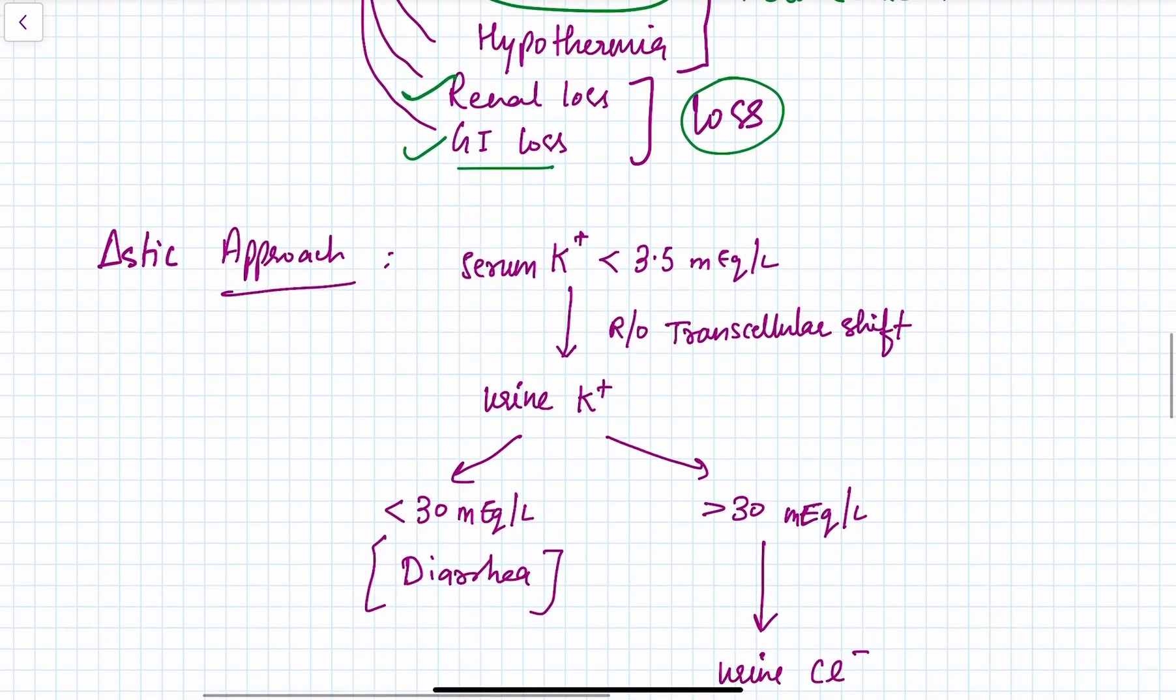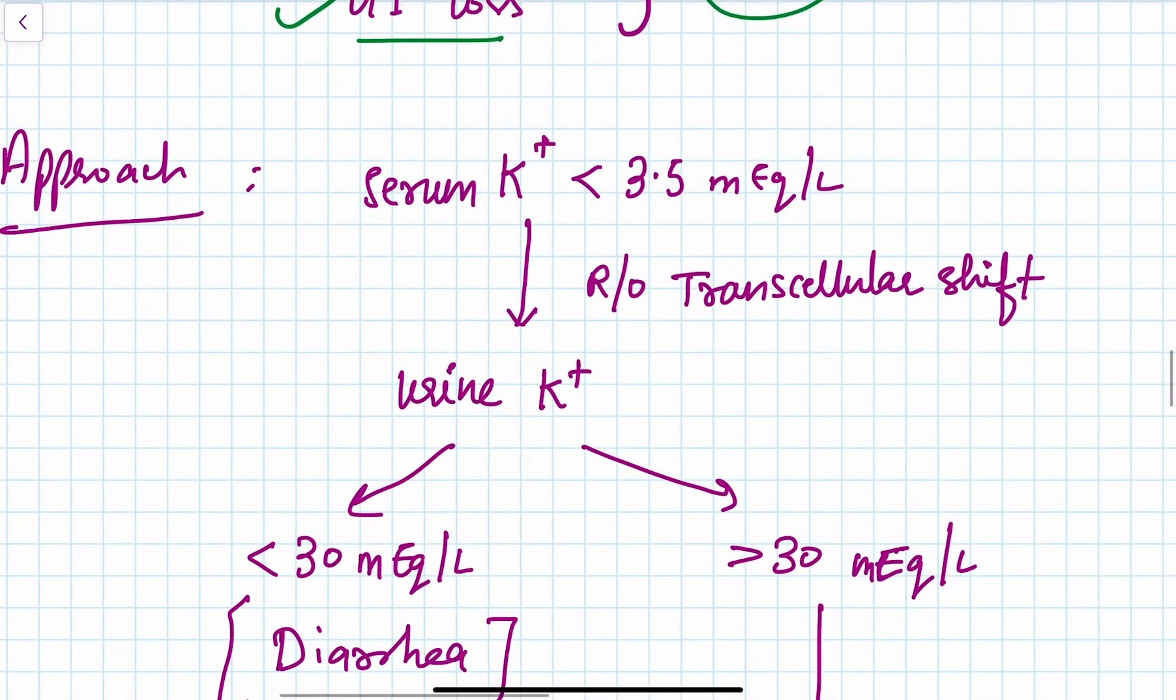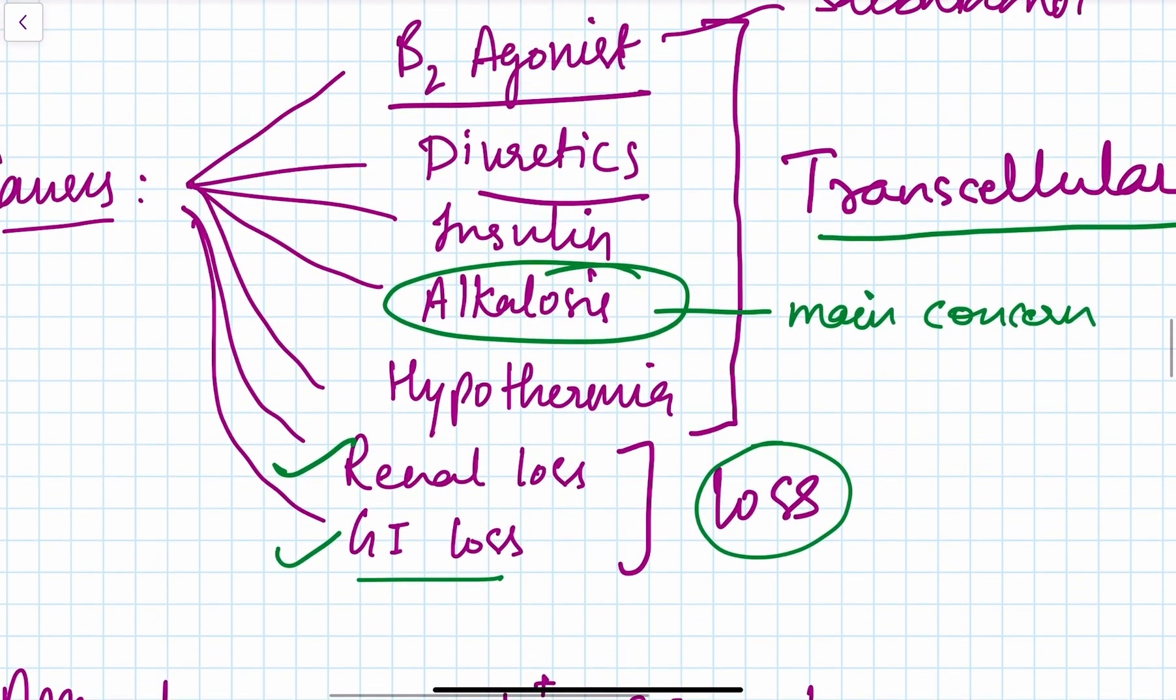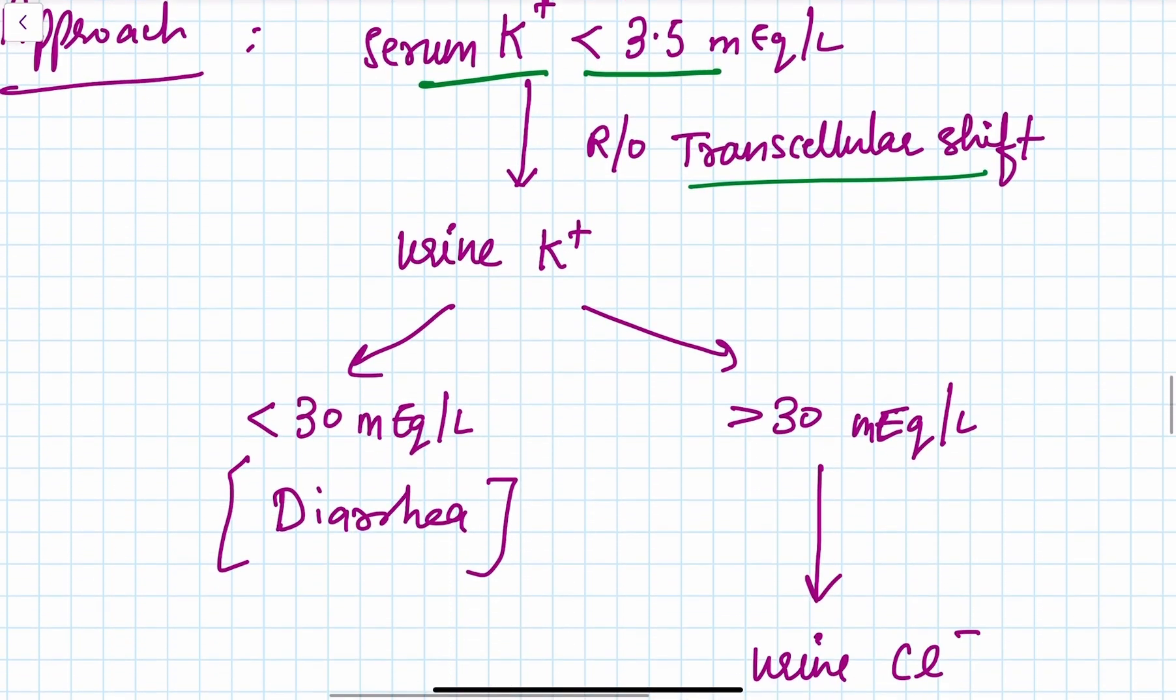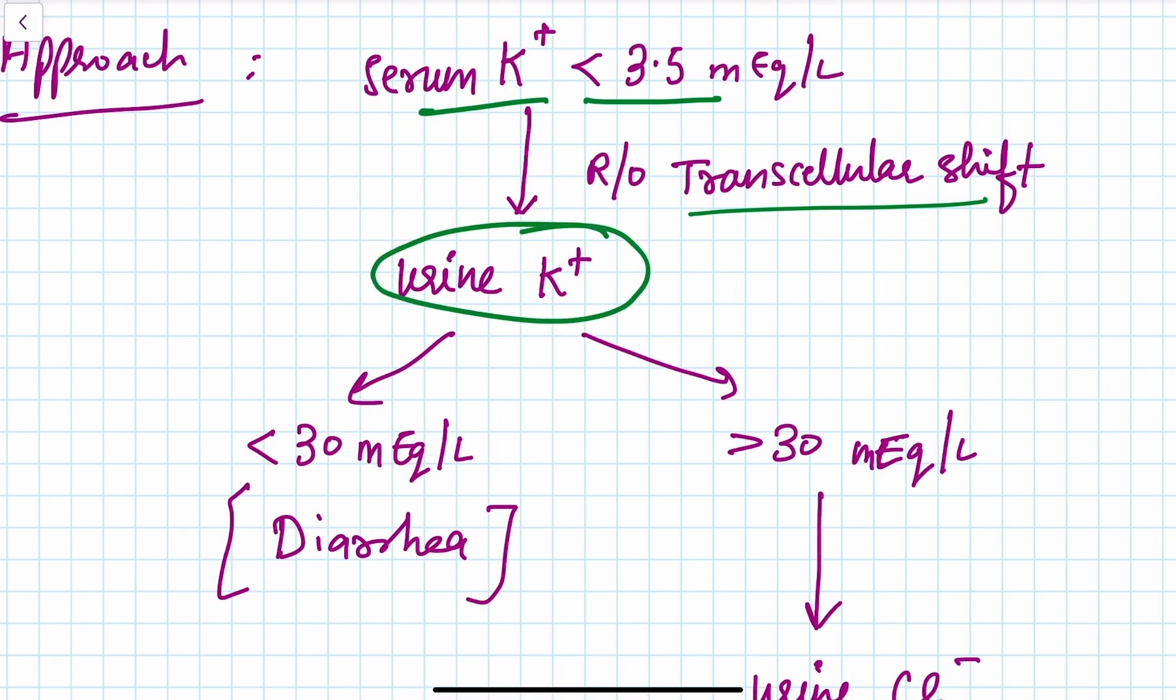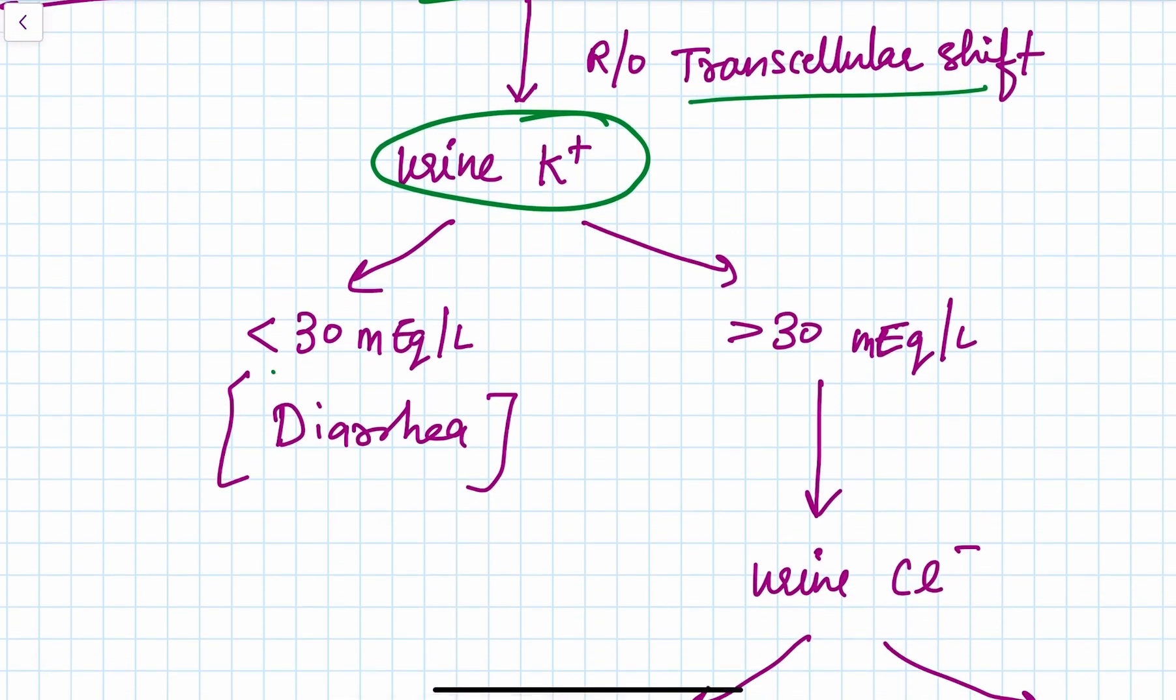For the diagnostic approach, when serum potassium is less than 3.5 mEq/L, we first rule out transcellular shift—the five causes: beta-2 agonists, diuretics, insulin, alkalosis, and hypothermia. After that, we measure urine potassium.